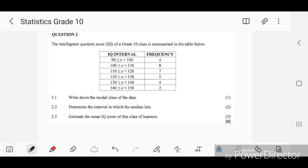They are saying write down the modal class. Remember, the mode is the number that is mostly repeated. So if they say modal class, you check on your frequency here. The mode lies in an interval with the highest frequency. So the highest frequency in this case is this one, so the modal class will be 100 to 110 because that is the highest frequency.